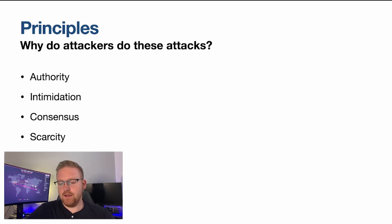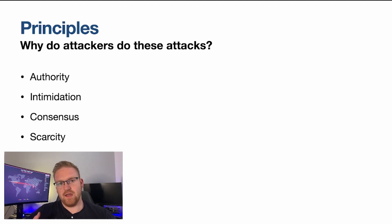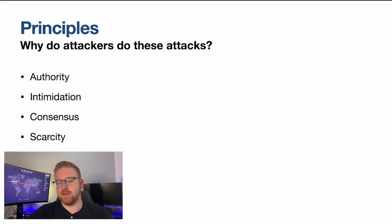One principle is that attackers can demonstrate some level of authority. Now, this is of course artificial — they're trying to convince the target that they have authority. Maybe they're impersonating a CEO or any kind of manager-level figure. Or they try to impersonate someone with an industrial level of authority, like they are very knowledgeable on something.